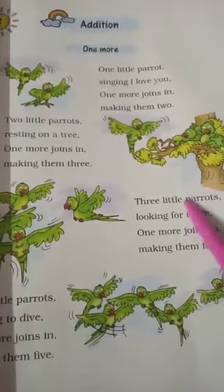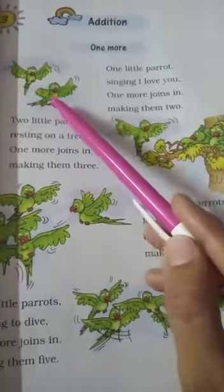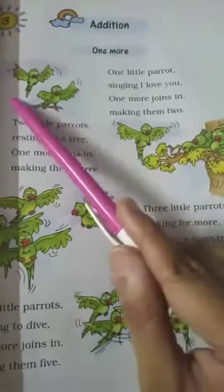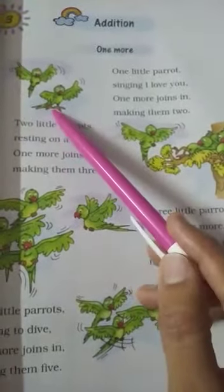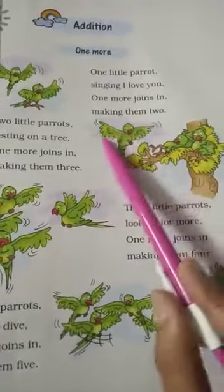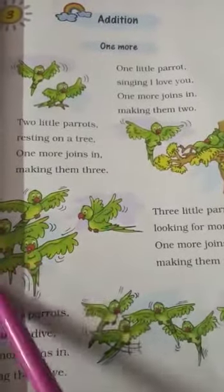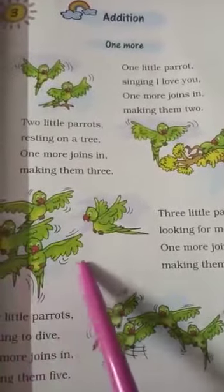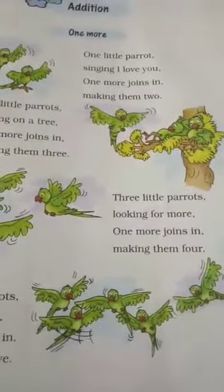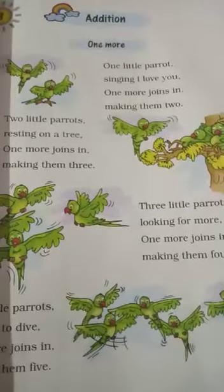In this story, in the beginning there was one parrot and then one more joined and they were two. After that one more joined and they became three. After some time one more came and they became four. In the last one more joined them and they became five. This is called addition.